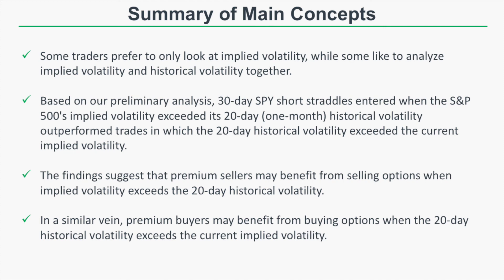The findings suggest that premium sellers may benefit from selling options when implied volatility exceeds the 20-day historical volatility, because those options are trading at higher prices than the stock's recent price action would suggest. Conversely, premium buyers may benefit from buying options when the 20-day historical volatility is at a level greater than the current implied volatility.